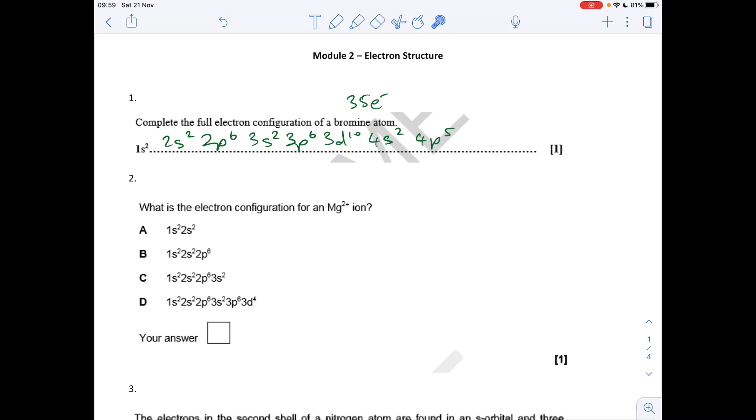I've put them in order of shell, so all the third shell electrons together, then the fourth shell. But you can write them in order of filling, so after 3p, 4s2, and then 3d10 4p5. Either way is fine.